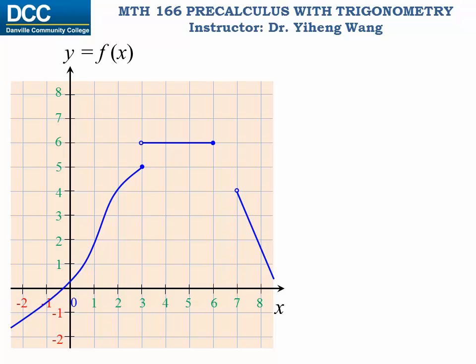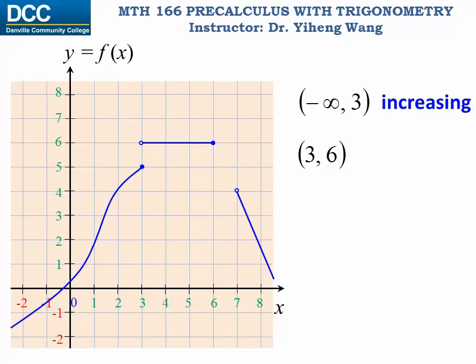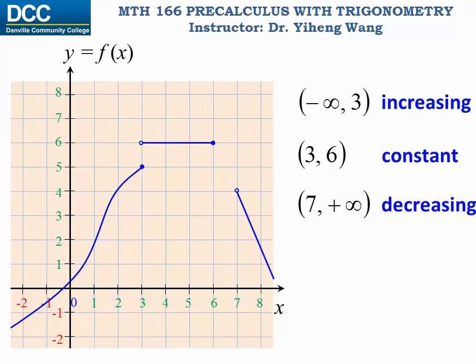Sometimes a function is increasing, decreasing, or constant on different intervals. For example, for this function, on the interval from negative infinity to 3, the function is increasing. For the interval from 3 to 6, the function is constant. For the interval from 7 to positive infinity, the function is decreasing. When we describe those trends, we only use round brackets, indicating open intervals.